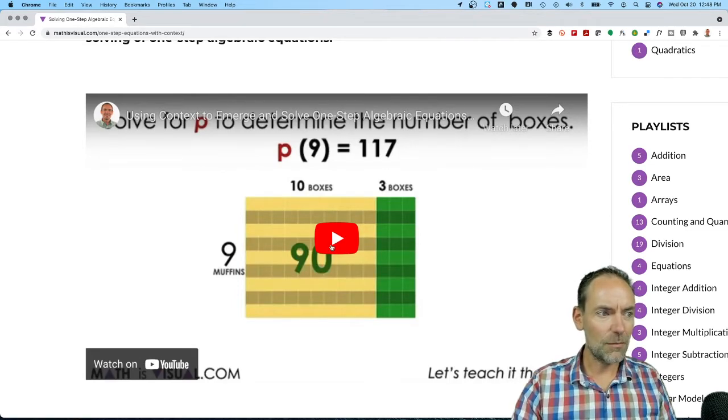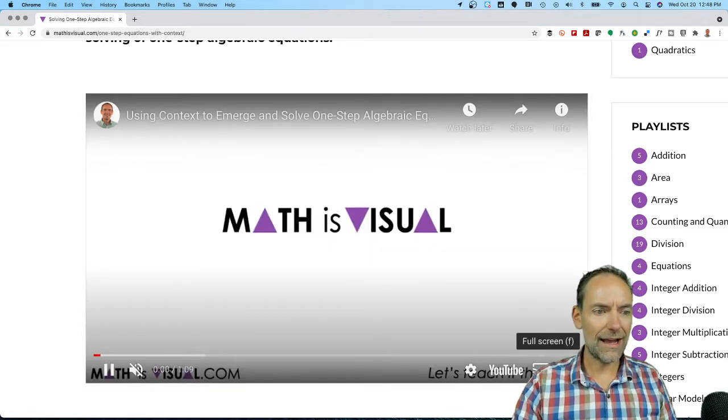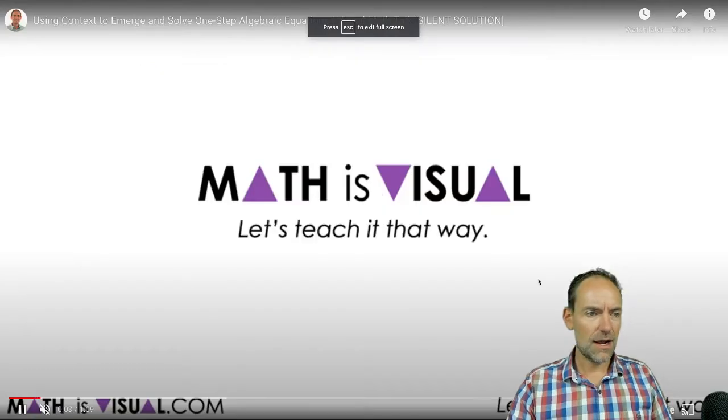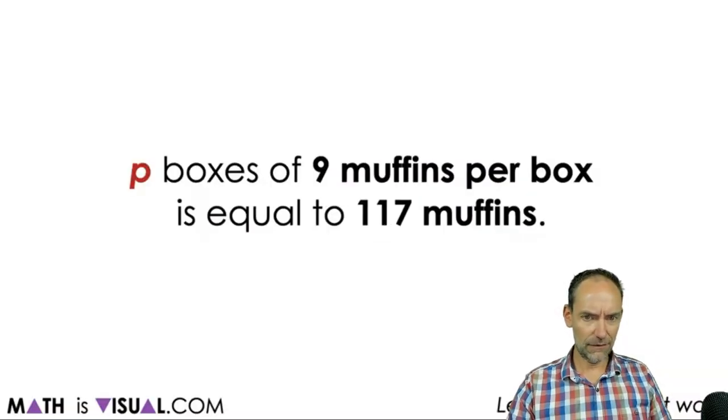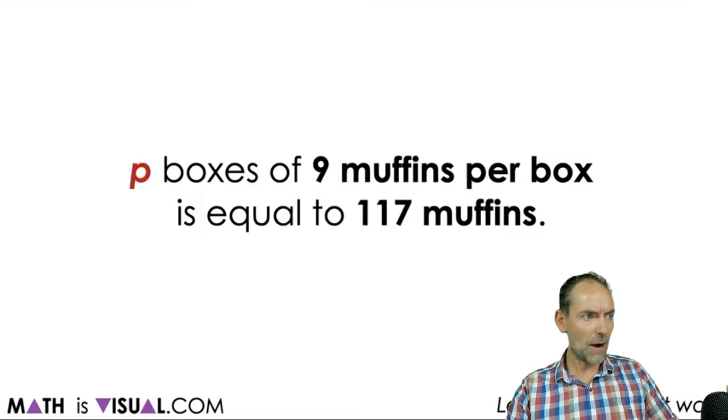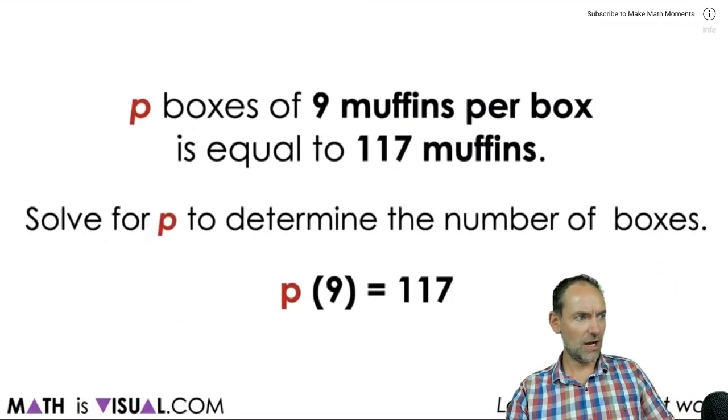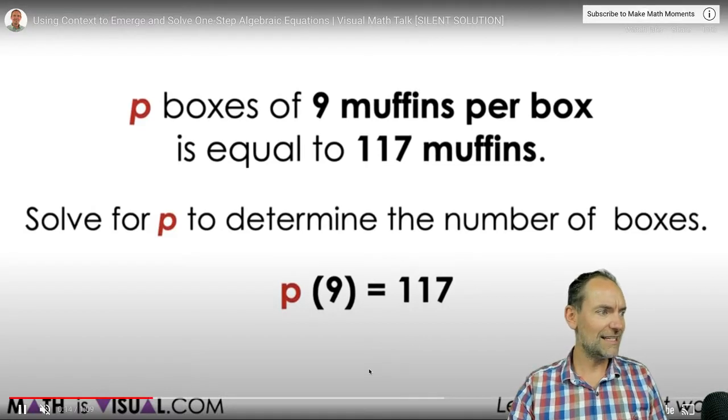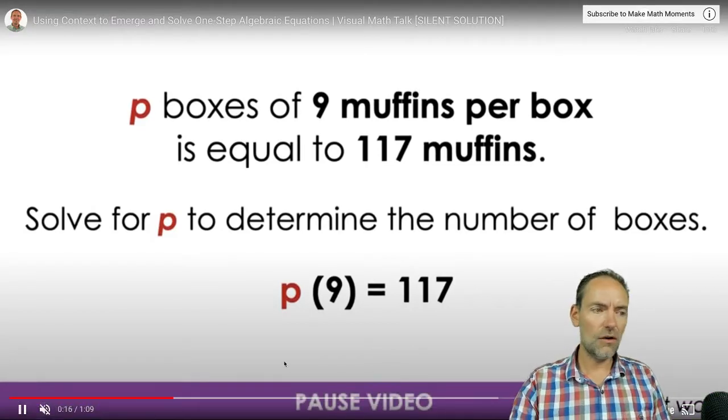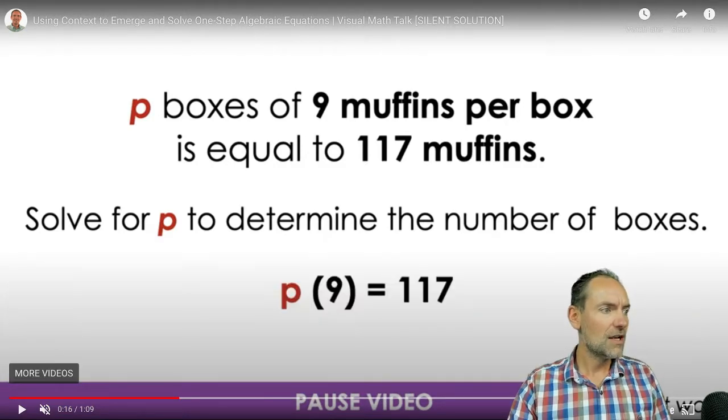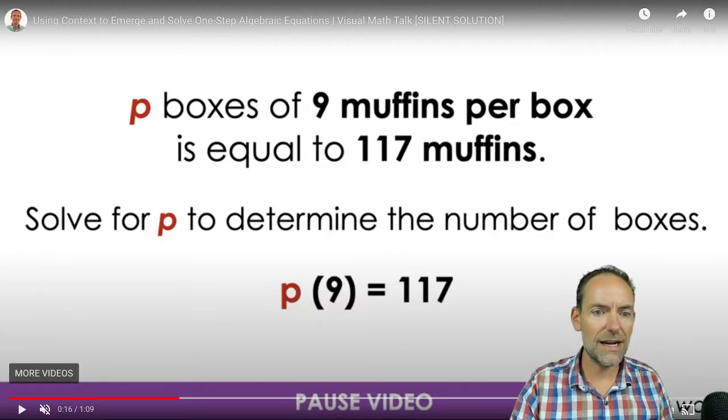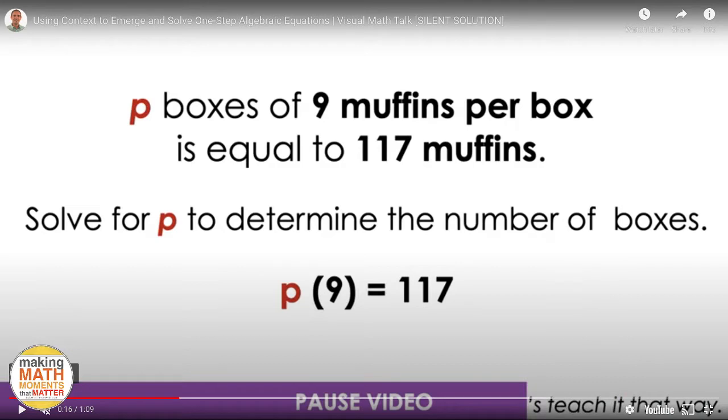So let's have a look at this particular visual prompt here. And let's see what we have here. And I'm going to go ahead and turn off my camera here for a second so you can check this out. So we have P boxes of nine muffins per box is equal to 117 muffins. Solve for P. You'll notice it says to pause the video. So we're going to go ahead and do that. Solve for P to determine the number of boxes.